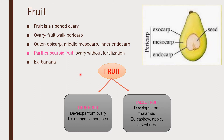An example of a parthenocarpic fruit is banana. Fruit is of two types: true fruit and false fruit. True fruit means the fruit which develops from the ovary — examples are mango, lemon, and pea. False fruit means the fruit that develops from the thalamus region — examples are cashew, apple, and strawberry.